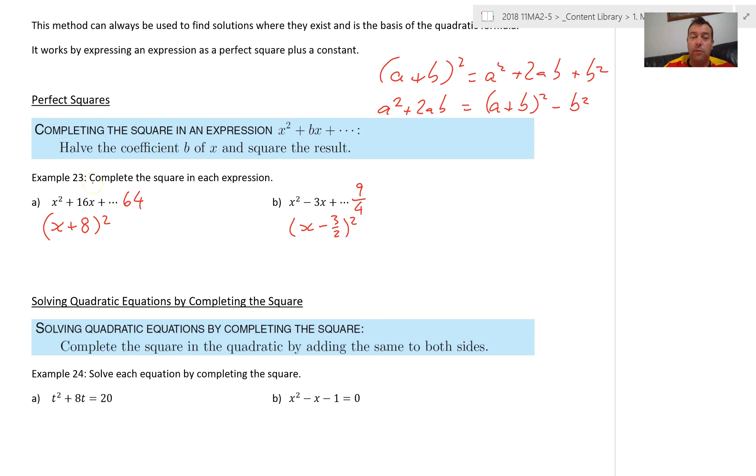What you need to remember to do is to halve the coefficient of x. So I've got 16 here, halve it, I get 8. So x plus 8 all squared, halve it and square it. So that's what we call a perfect square because this is the square of half of this.